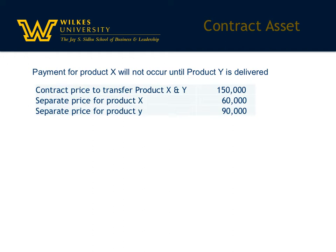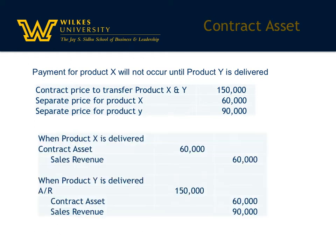Let's look at what happens when product X is delivered first and product Y is delivered later. When product X is delivered, the sales revenue of $60,000 is recorded as a credit to sales revenue. But there isn't a corresponding receivable because they're not entitled to the receivable until product Y is delivered.